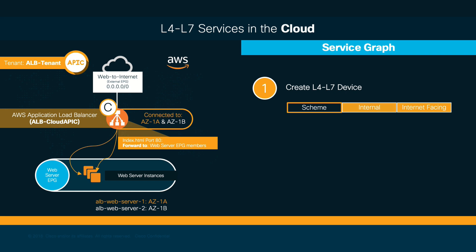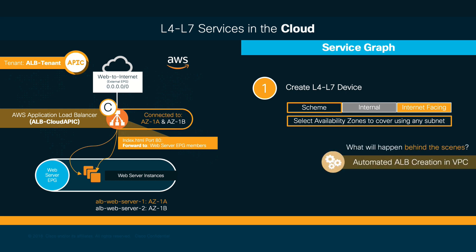ALBs can be internal or internet-facing. In this case, we are going to use the internet-facing option, since we are going to request our webpage from the internet. After selecting the type of device, you must select the availability zones where you want these components to reside. When this configuration is finished, the ALB will be automatically spun up.